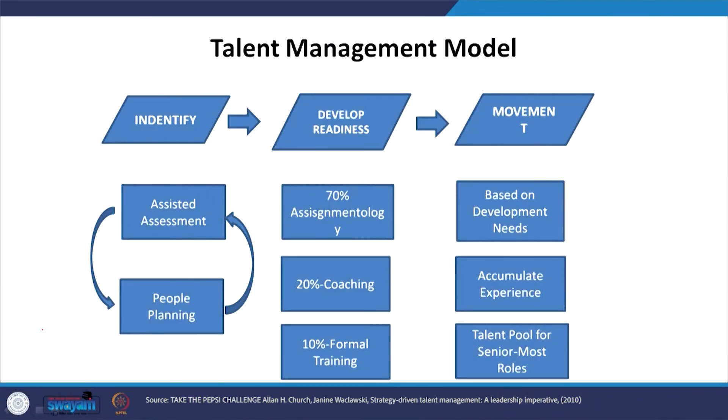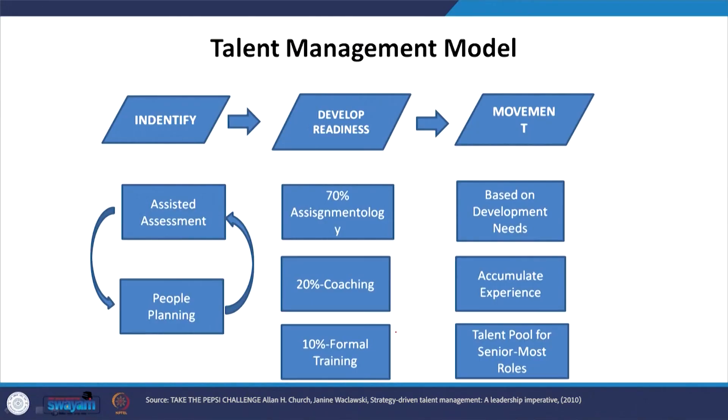As the employee grows, the most important part is coaching — how coaching is done for talented employees. If 20 percent coaching is done, then they will be able to perform and cope with the organization. And 70 percent is assignment-based. If we are giving them assignments then they will be able to deliver. So developing readiness means 70 percent assignment, 20 percent coaching, and 10 percent formal training. Performing this procedure develops the readiness of our talented or potential employees.